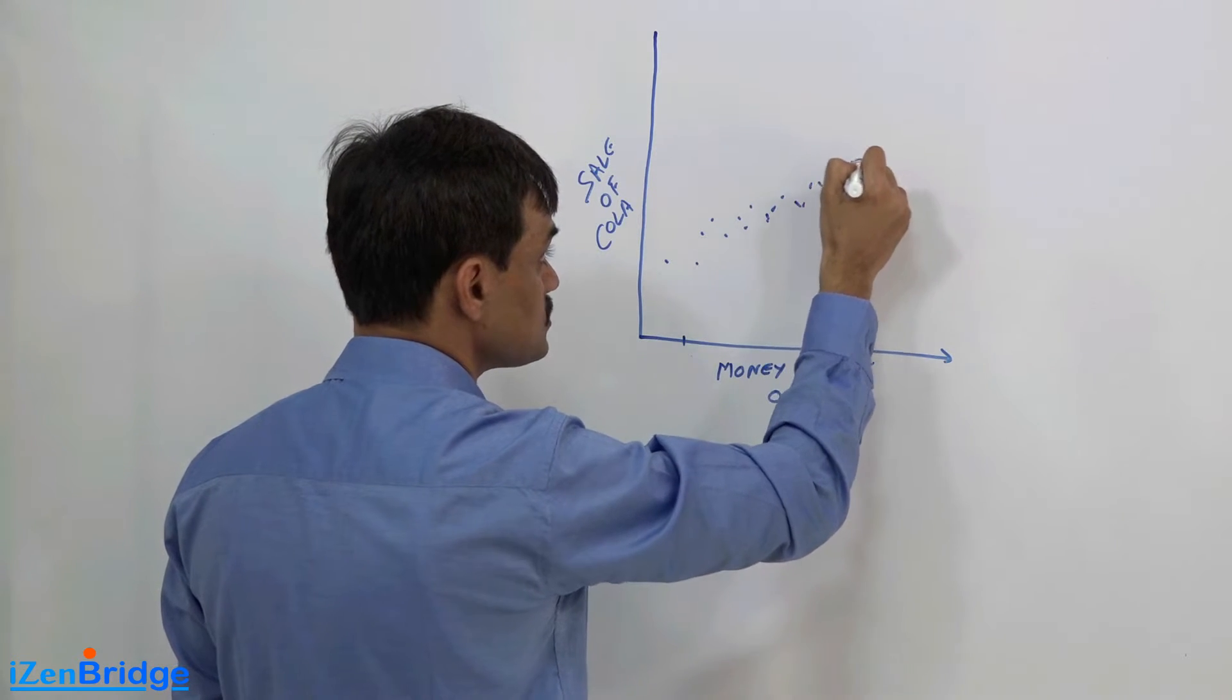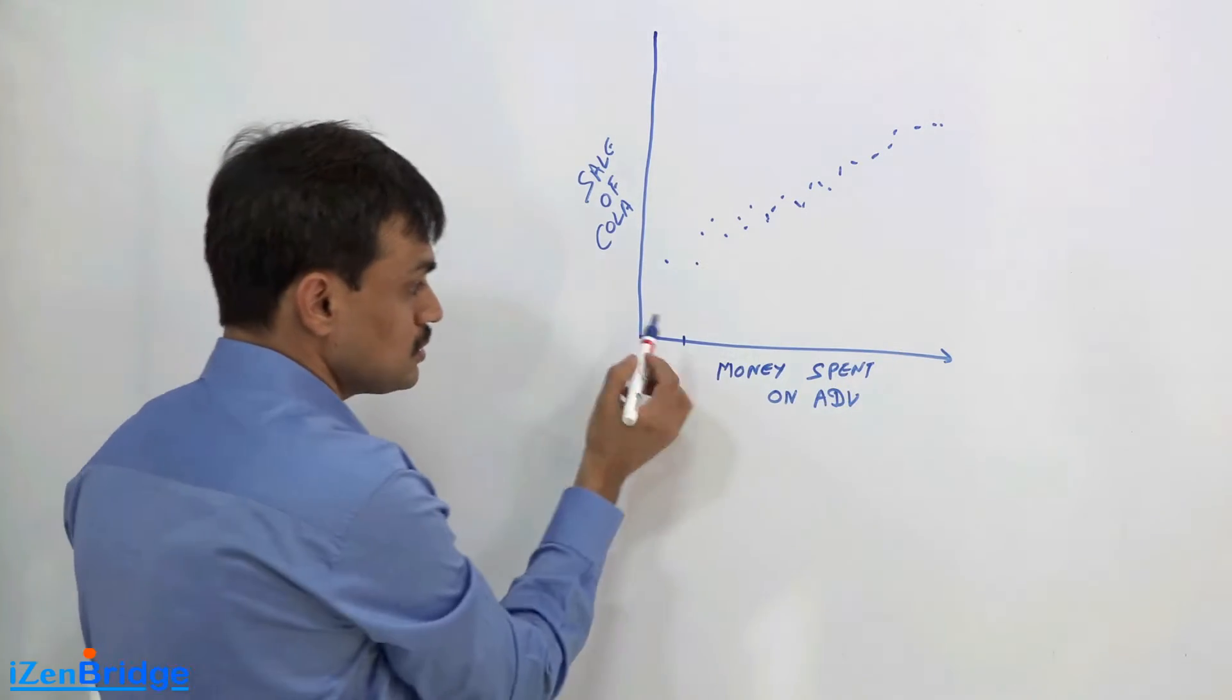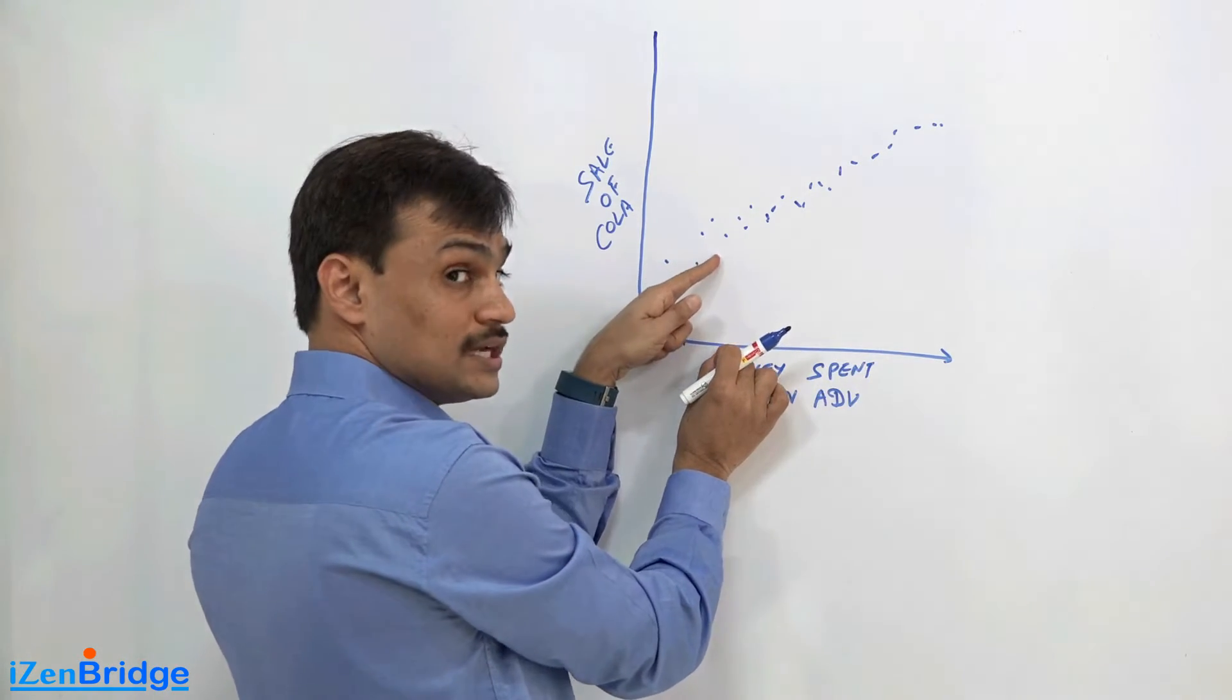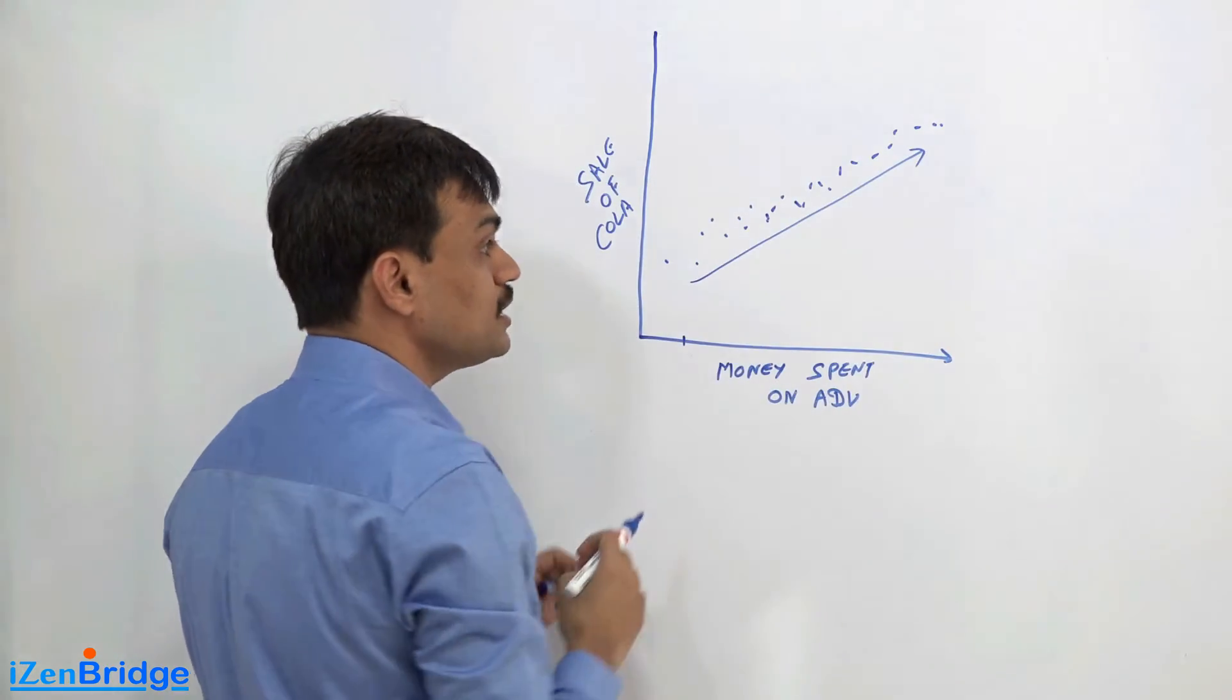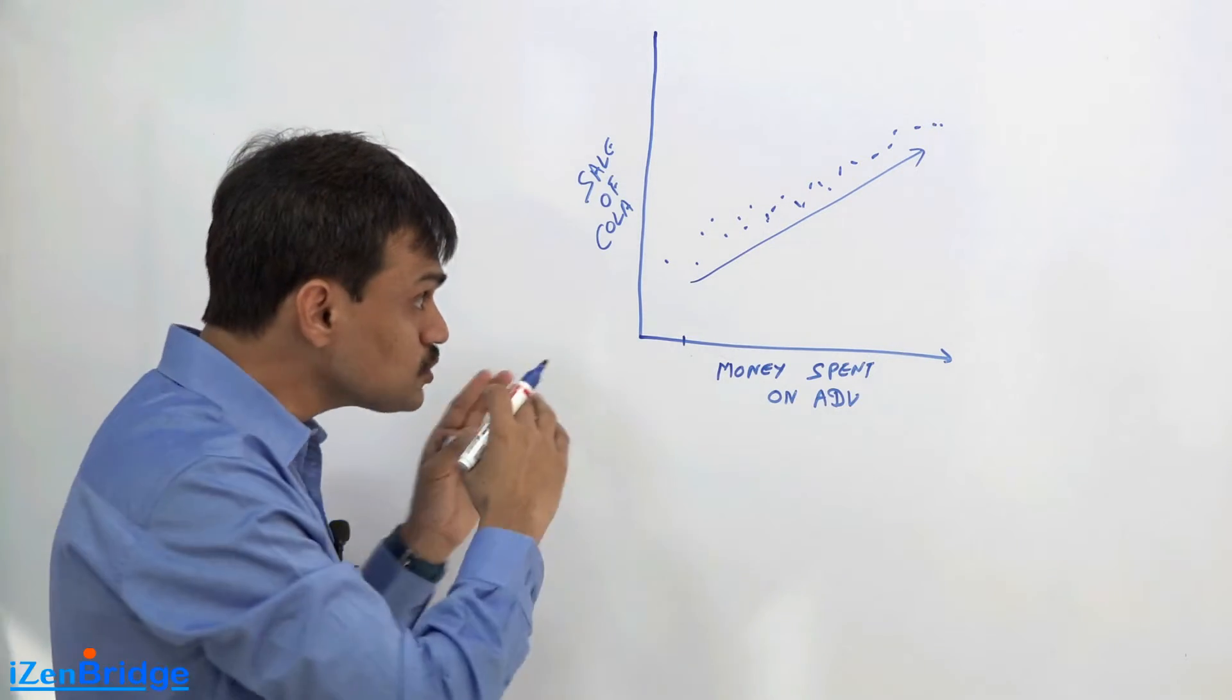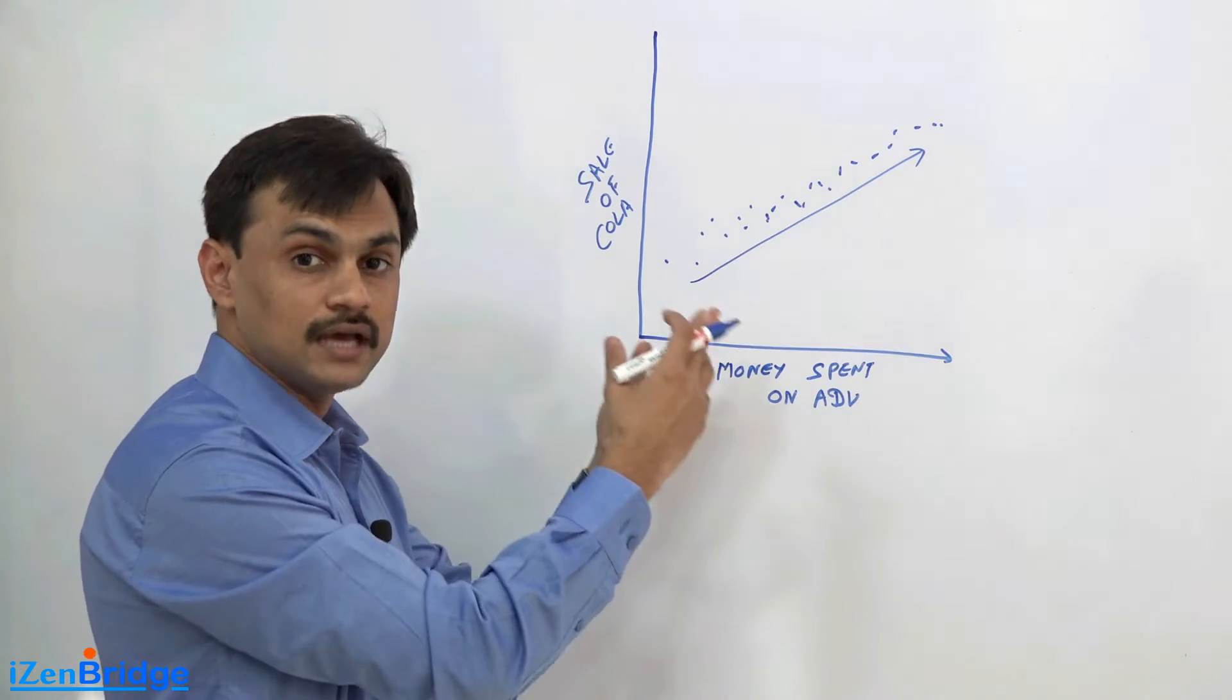Now you may see that if there is a relationship, as you are increasing the money spent, maybe the cola sale is also increasing. So if you see this kind of an increasing relationship or a line emerging, then you can see that both these things are correlated. And since it is going up, you can think of it as correlated in a positive direction - meaning as you are spending more money, the cola sales is increasing.